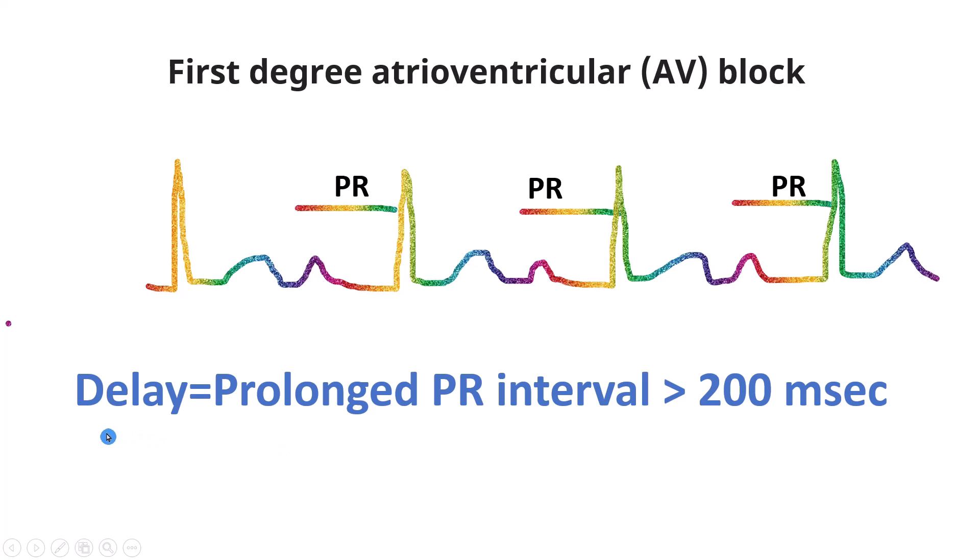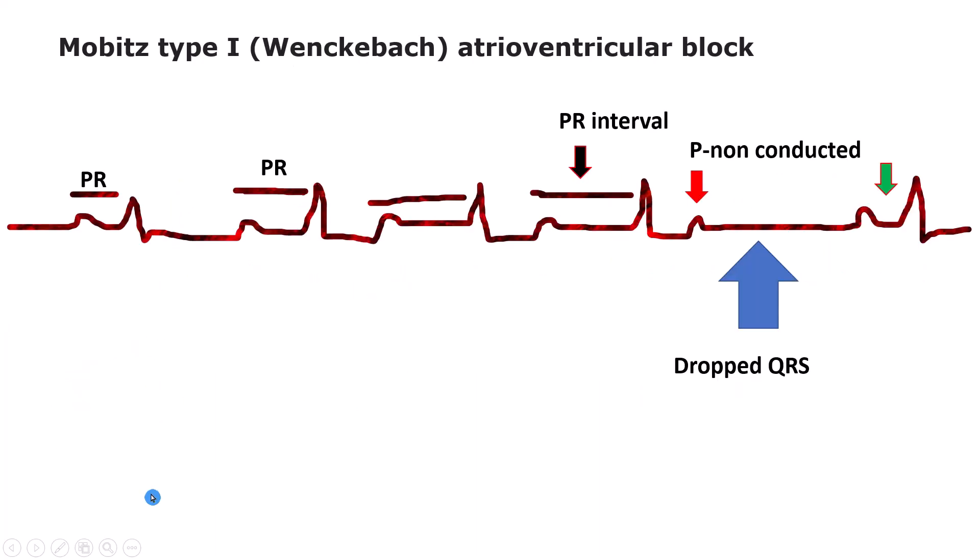Second degree AV block is characterized by intermittently dropped QRS complexes. There are two major subtypes of second degree AV block: Mobitz type 1, which is also called Wenckebach phenomenon, and Mobitz type 2.